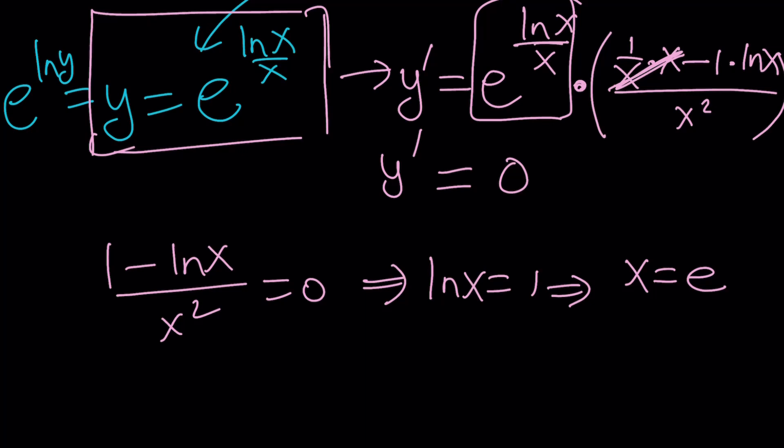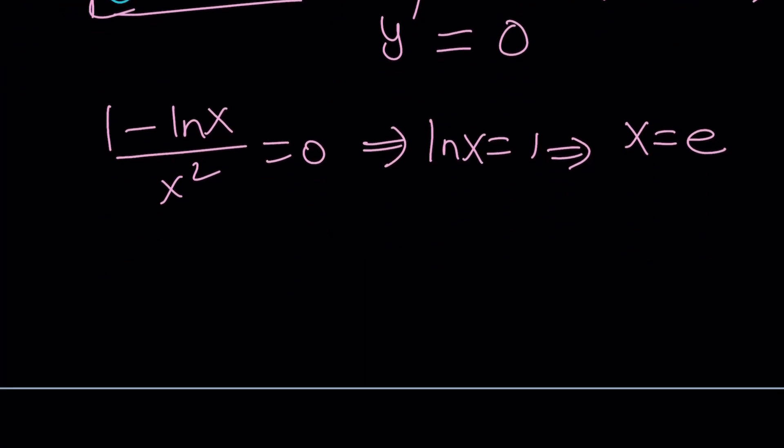So for x equals e, we have a critical point. And let's go ahead and make a table. We're going to make a table with rows for x, y prime, and y. And then we have a critical value which is at e. So this is e, and this is where the derivative changes sign.